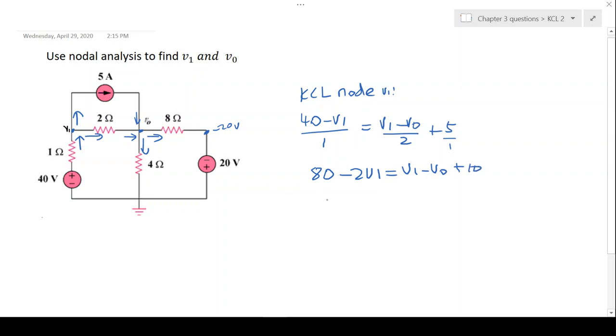If we simplify this, it will become 80 minus 10 is going to be 70 equals 3v1 minus the voltage v0, and this will be our first equation.